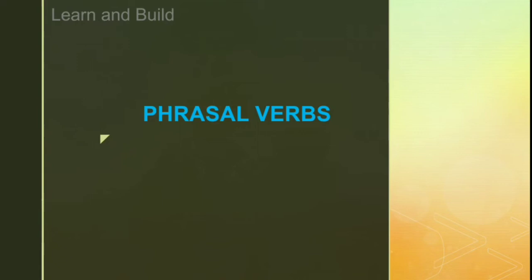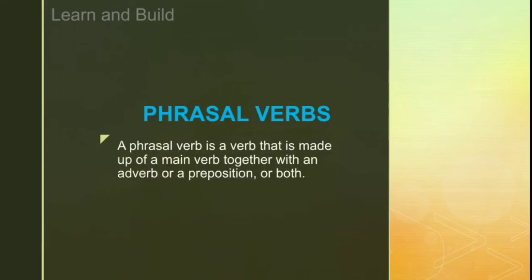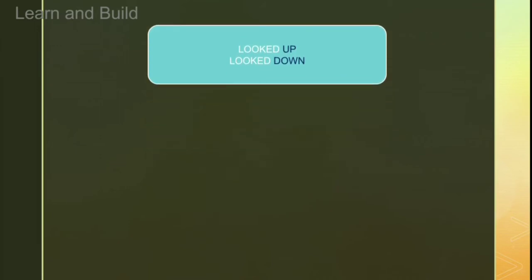So let's quickly see what phrasal verbs are. A phrasal verb is a verb that is made up of a main verb together with an adverb or preposition, or both. Yani agar hum main verb ke aage adverb ya preposition ya dono laga de to phrasal verb banta hai. For example, if we take 'look' as the main verb and add 'up', we get 'look up' — a phrasal verb. Similarly, adding 'down' gives us 'look down' — also a phrasal verb.